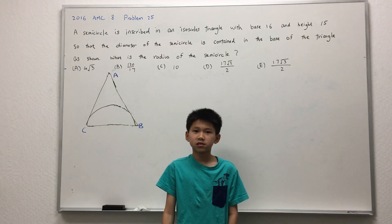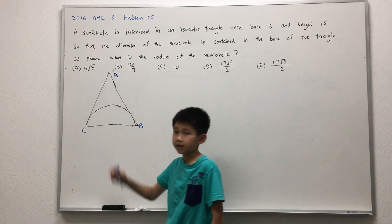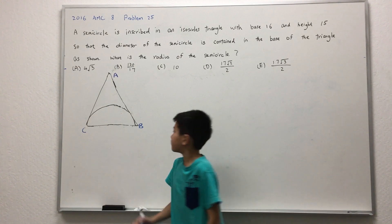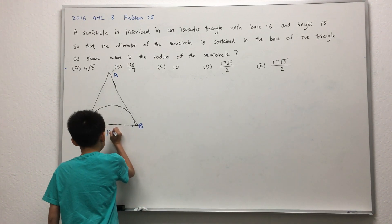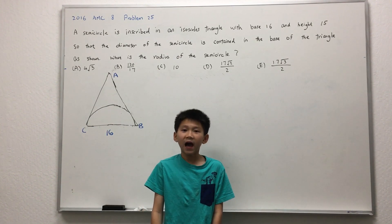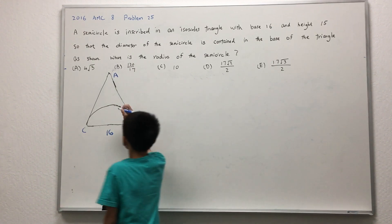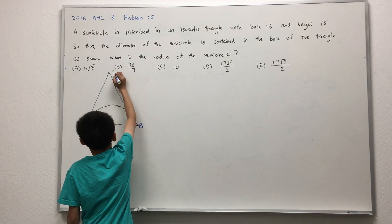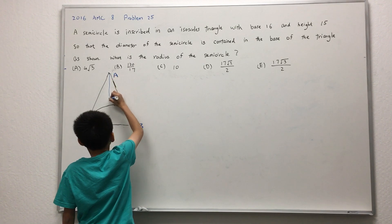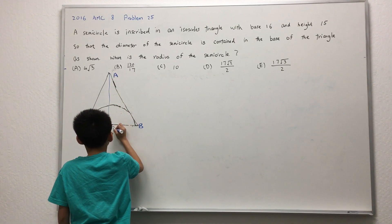The problem tells us that the base BC is 16, so BC equals 16. It also tells us that the height is 15. Point D is on BC, such that AD is perpendicular to BC.